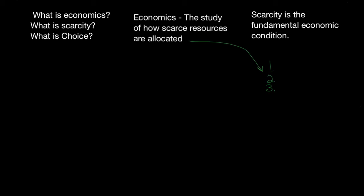Economics is the study of how scarce resources are allocated. Three types of resources that we talk about in economics are land, labor, and capital. Land is fairly self-explanatory. Labor are the people that are going to create the goods or provide the services, and capital is the financial resources such as cash, buildings, machinery, or equipment.